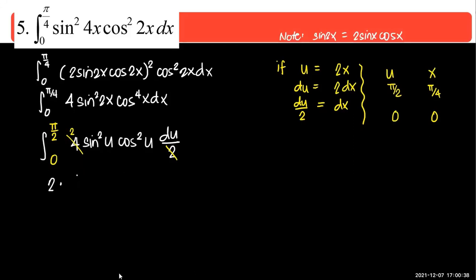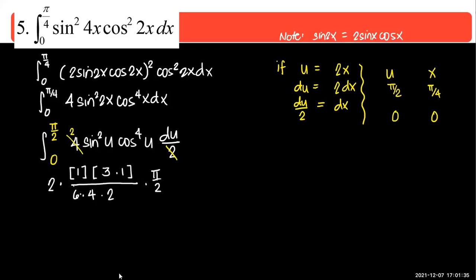After substitution, the integral becomes one-half times the integral of sine squared u times cosine to the 4th u du from 0 to pi over 2. Now we can apply Wallis's formula. The power of sine is 2, giving numerator factor 1. The power of cosine is 4, giving 3 times 1. The denominator is 6 times 4 times 2. Both are even, so the multiplier is pi over 2. After canceling, the answer is pi over 32.